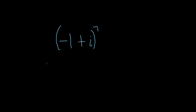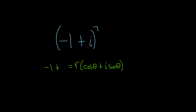Hi everyone. In this problem, we're going to raise this complex number to the seventh power. To do that, we'll start by writing it in what's called trigonometric or polar form. A number is in trigonometric or polar form if it has the form r times the quantity cosine theta plus i sine theta. So I just set this equal to the complex number, negative one plus i.